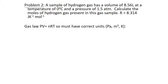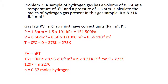Problem two: a sample of hydrogen gas has a volume of 8.56 litres at 0°C and 1.5 atmospheres. Calculate the moles of hydrogen gas present. Converting units: pressure = 1.5 × 101 kPa in pascals; volume = 8.56 × 10⁻³ m³; temperature = 273 K. Plugging into PV = nRT gives 1297 = n × 2270, so n equals 0.57 moles of hydrogen.